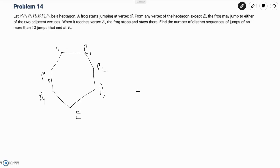The problem reads: let S, P1, P2, P3, E, P4, P5 be a heptagon. A frog starts jumping at vertex S. From any vertex of the heptagon except E, the frog may jump to either of the adjacent vertices.